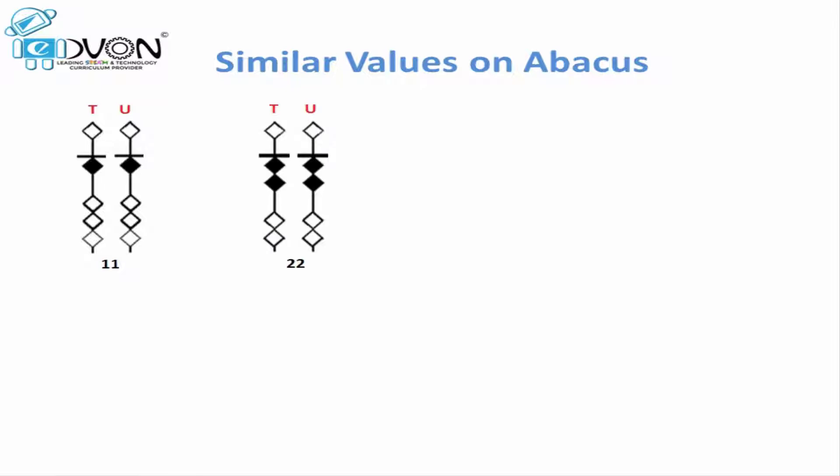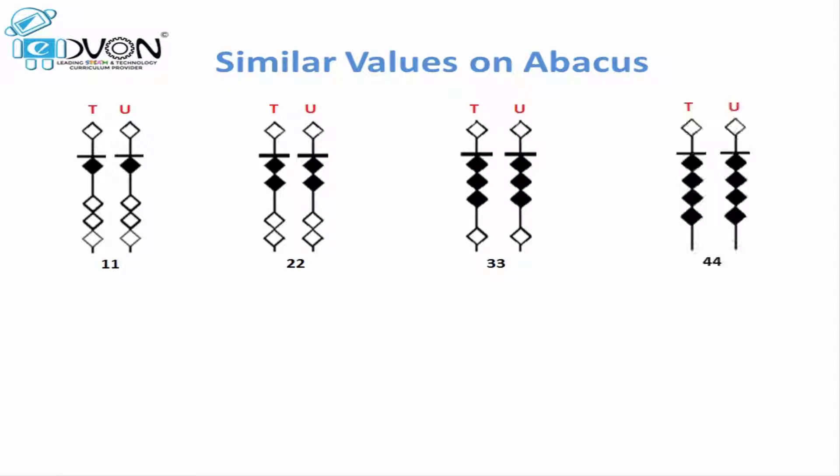In 22 we have two tens and two units, so we will move two lower beats up to touch the calculation bar on both the rods. How we will place 33? In 33 we have three tens and three units, so we will move three lower beats up to touch the calculation bar on both the rods. For 44 we will move four lower beats touching the calculation bar on both the rods.